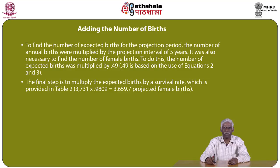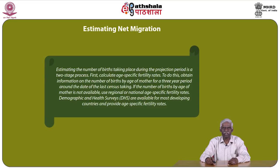It was also necessary to find the number of female births. To do this, expected births were multiplied by 0.49, which is based on equations 8.2 and 8.3. The final step is to multiply the expected births by a survival rate as provided in the table.